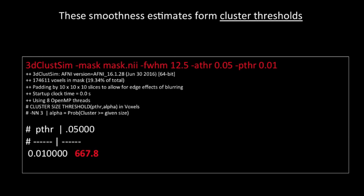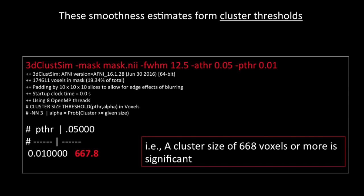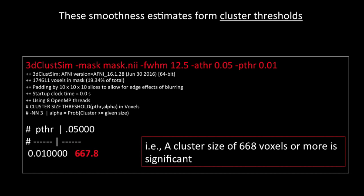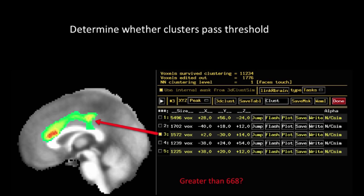For example, taking the average of all three directions and giving it a cluster-defining threshold of 0.01 — meaning every contiguous voxel has to pass an individual threshold of 0.01 — a cluster of 667.8 voxels would be found 5% or less of the time. So if I find a cluster greater than that size, that's so unlikely that I can determine the cluster is in fact significant. Looking at my results, I compare that cluster size to all my clusters for a given contrast and determine which ones are significant and which ones are not.